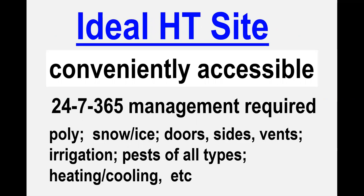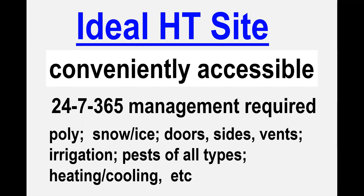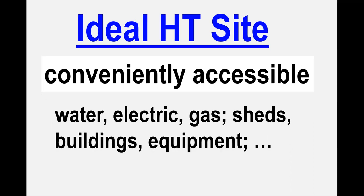In the next few minutes, look for the major aspects or characteristics of an ideal high tunnel site highlighted in white text boxes. The first is that the site needs to be very accessible. You'll need to be able to reach the site at nearly any time of day or night and any day of the year to manage the tunnel. There has been a history of tunnels being somewhat far removed from the home farm or from where the manager will be — that is a really difficult situation. So when at all possible, have the high tunnel be very accessible. One also needs access to water, electric, gas if needed, sheds, buildings, equipment, and any other input that will be needed for the tunnel.